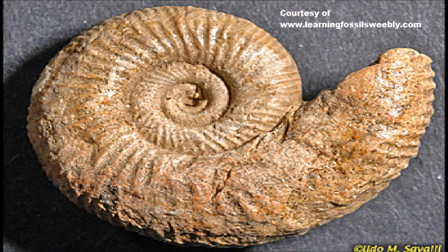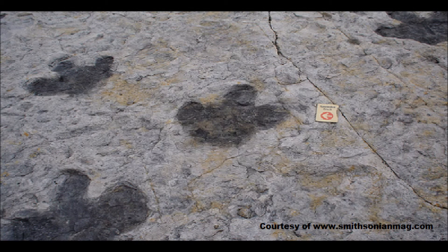Number three, we have trace fossils. These are also called ichno fossils, but they're basically anything created by the animal, but it's not necessarily the animal itself. So trace fossils could be footprints, nests, tracks, or a home an animal might have dug itself.